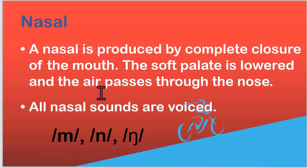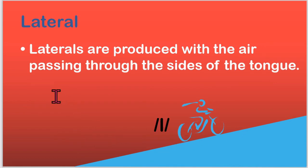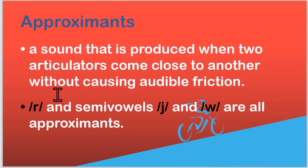Nasal sounds are produced when the air flows out through the nose — the mouth is closed and air flows through the nose. M, N, and ng are nasal sounds in English. Lateral sounds are produced with the air passing through the sides of the tongue; L is the only lateral sound in English. And finally we have approximants, which are sounds when two articulators come very close but there is no audible friction. R is an approximant and the two semi-vowels are also approximants.